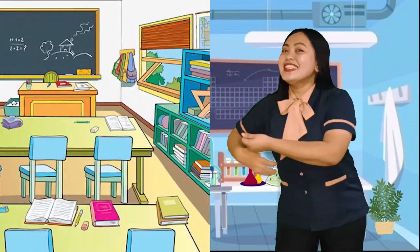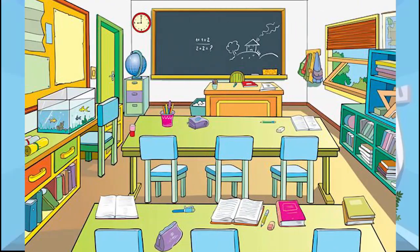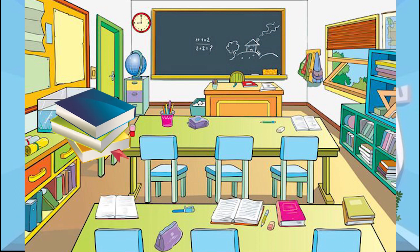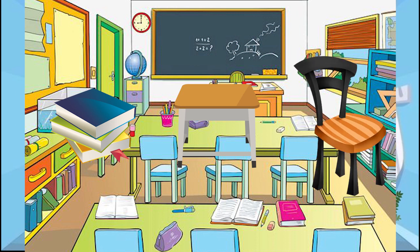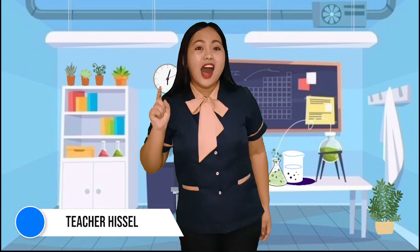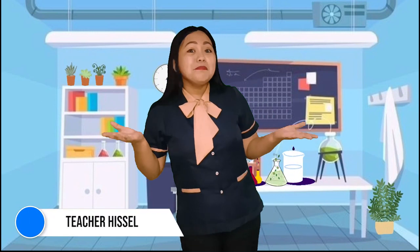This is the last picture. It's familiar, right? It's a classroom. What do you see? Right, there are books, table, and chairs. Good job, students. I can say that you observed thoroughly. All the things that you saw are all matter.